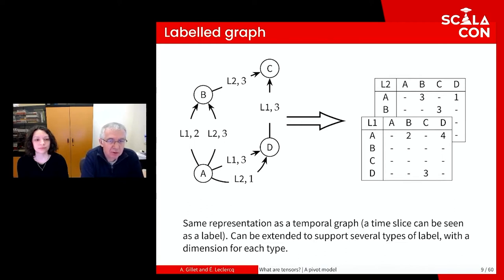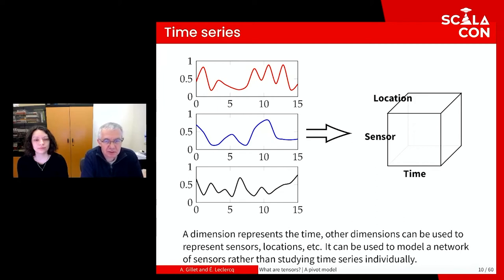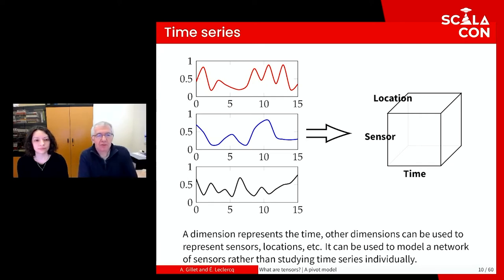More generally, labeled graphs can also be represented as tensors. They can be multi-labeled, and each type of label constitutes a dimension. A temporal graph can be seen as a labeled graph with the label being the temporal indication. Modeling time series in tensors is also very interesting because it allows seeing variables all together in the same structure — they can be considered as a whole rather than individually. For example, we can represent a spatial-temporal measure of different sensors in a three-order tensor.